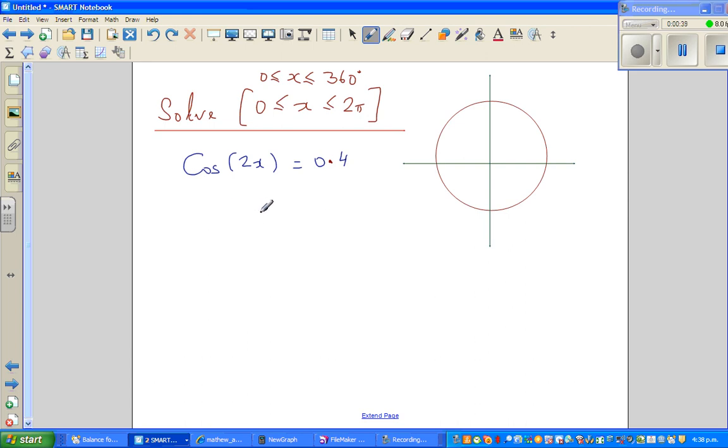So here, cos 2x is 0.4. The first thing we need to do is, this 2 tells me that the period of this would be 360 divided by 2. So here, this equation of cos 2x is 180. This means within 360, you've got 2 cycles. So this should be kept in mind.